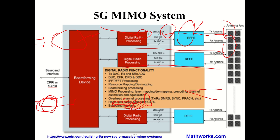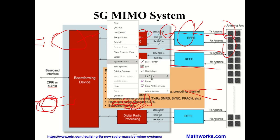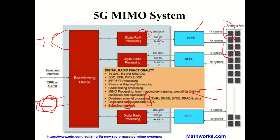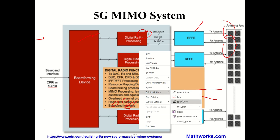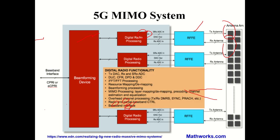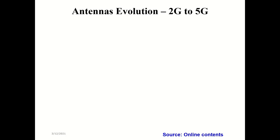The high-level design of a 5G MIMO system includes: baseband interface, beamforming device (calculating excitation for each element), and digital radio processing (RF front-end with antennas, power amplifiers, low-noise amplifiers, mixers, and other components).